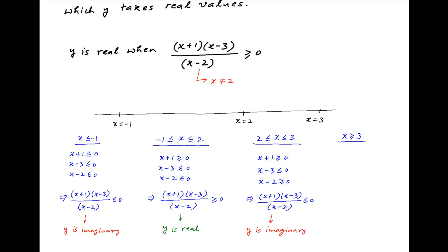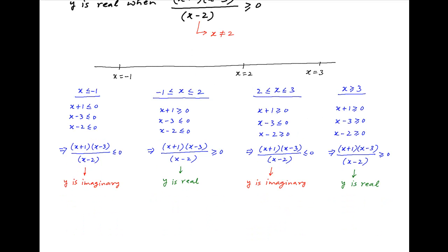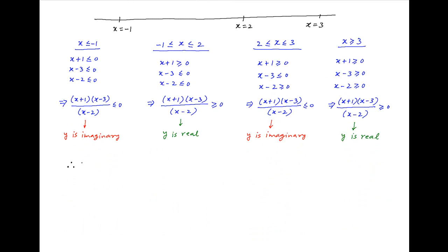And finally, consider the value of this expression when x is greater than or equal to 3. x + 1 is greater than or equal to 0, x - 3 is greater than or equal to 0, and x - 2 is also greater than or equal to 0. Therefore, the expression (x + 1)(x - 3) divided by (x - 2) is greater than or equal to 0 in this interval, and so y is real when x is greater than or equal to 3.